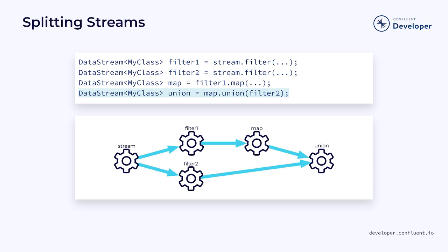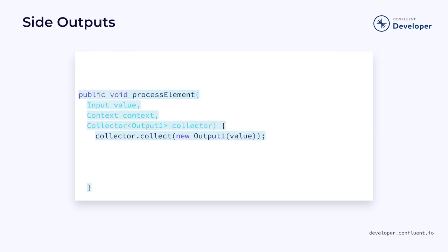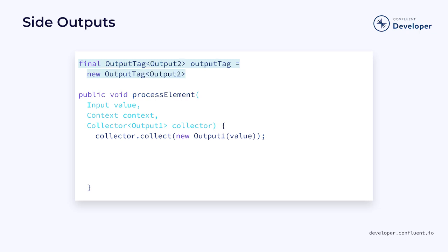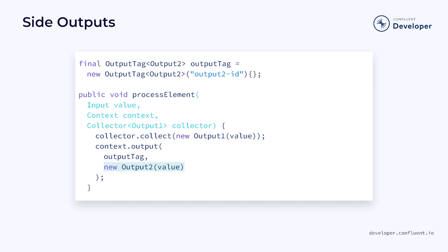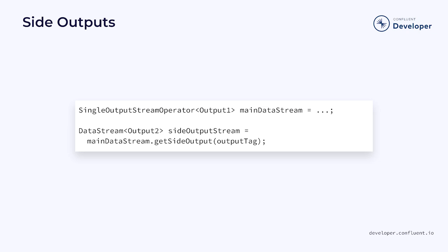This is powerful and allows us to create complex data flows. An alternative approach to splitting a stream is to use a side output. This requires access to the context object found inside of a process function or similar. To use a side output, we need a way to uniquely identify it — we do this using an output tag. Output tags consist of a type that represents the data contained in the side output and an ID which uniquely identifies it. These tags must be defined as anonymous inner classes so that Flink can use them to derive important type information. We use the output method defined in the context to create a side output, passing the output tag and the message we want to send. We call getSideOutput on a stream operator to retrieve any side outputs it produces, passing the output tag to identify which output we are interested in.